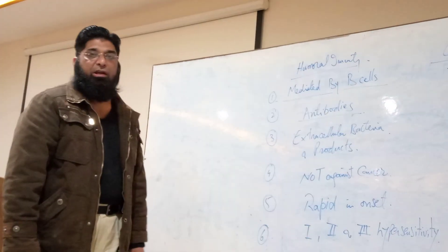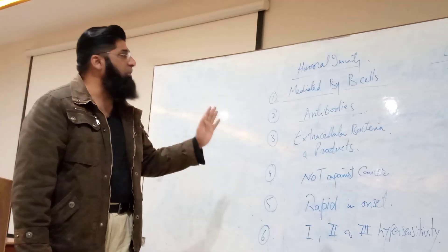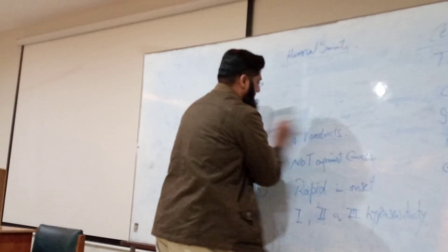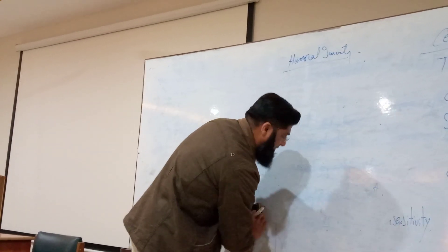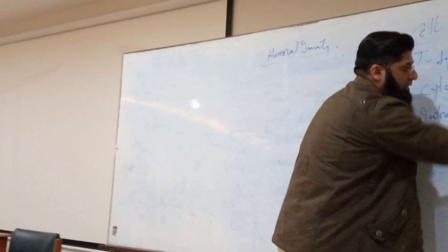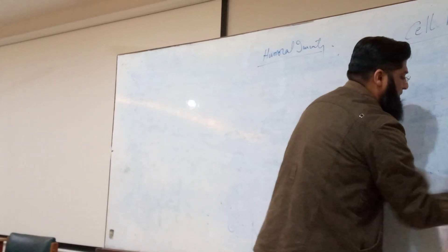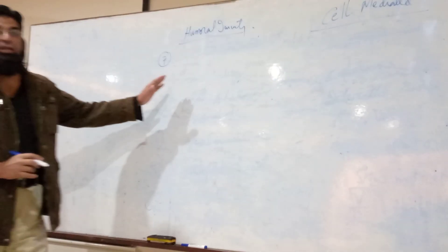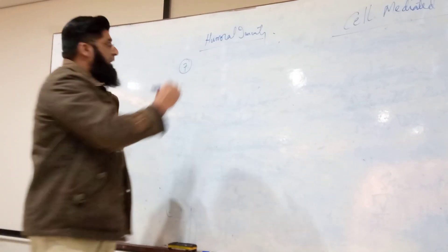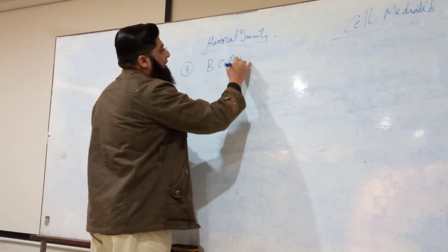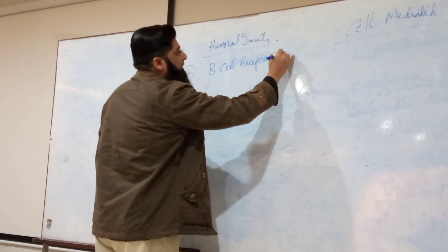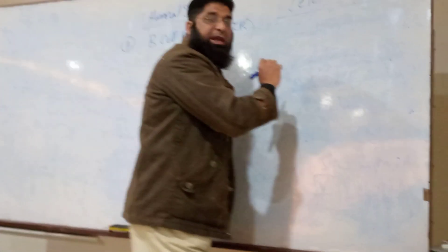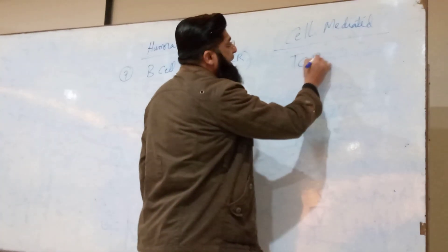Six points we have discussed which differentiate humoral immunity from cell-mediated immunity. Number seven: B-cells recognize the antigen through their B-cell receptors (BCR). On the other hand, T-cells recognize the antigen through their T-cell receptors (TCR).